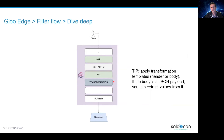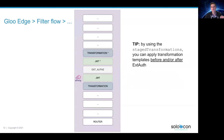Now the transformation filter. You can apply transformation templates on the headers or on the body. If the body is a JSON payload, you can extract values from it. You can also apply this transformation filter right before the ExtAuth filter.